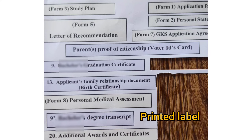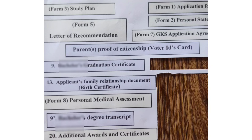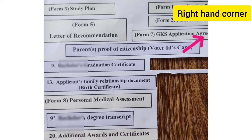I printed out all the forms and also a small printout for the labeling. I put a photo on it so you can check it. You can use sticky notes for labeling, but my handwriting is not so good and sticky notes were too big for my paper size, so I printed the labels instead. I mentioned the form number and what the form is. I cut it and paste it in the top right corner using glue.